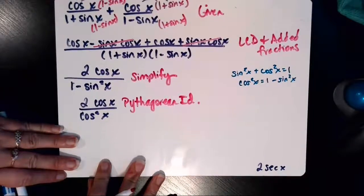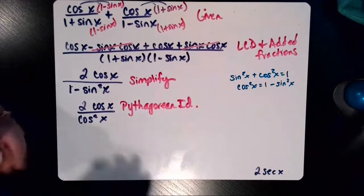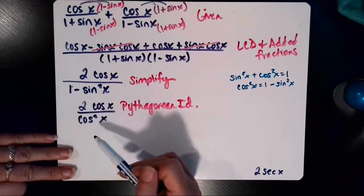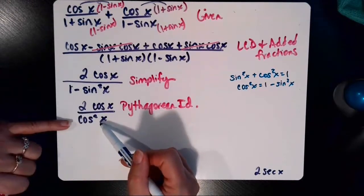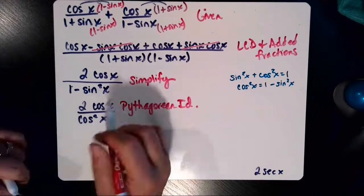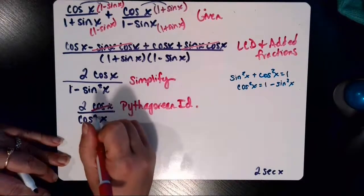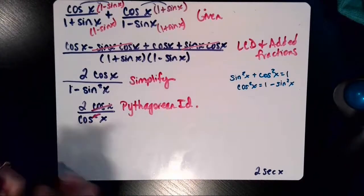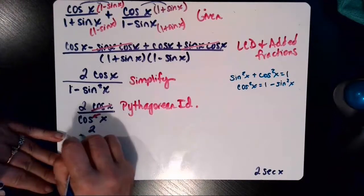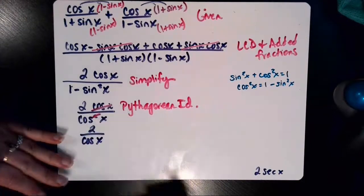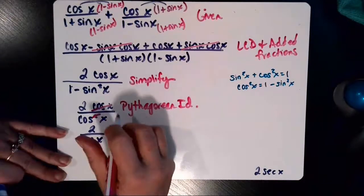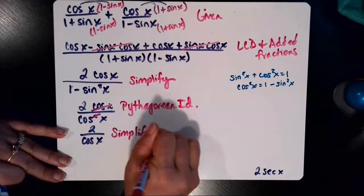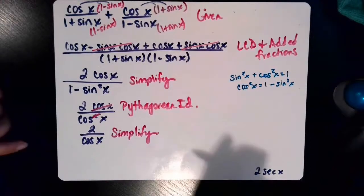And now we're ready to simplify. So we have 2 cosine of x in the numerator, a cosine squared x in the denominator. If I simplify, I can cancel a cosine x from the top and the bottom. That gets rid of that square. And I'm left with 2 over cosine x, and that is using simplify as the reason.